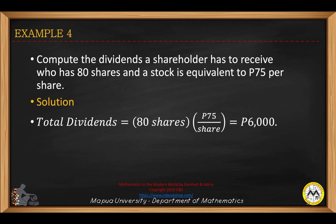Compute the dividends a shareholder has to receive who holds 80 shares, with a stock equivalent to 75 pesos per share. The total dividends will be 80 shares multiplied by 75 pesos per share, which gives 6,000 pesos.